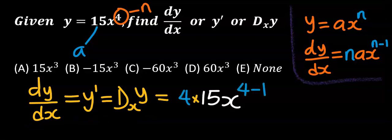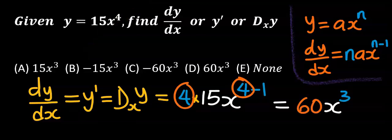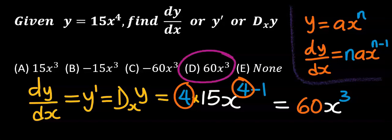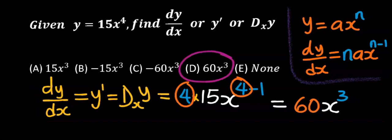You can see the four came down and this same four minus one. Our answer is 60x to the power of three, which is option D. This is calculus.